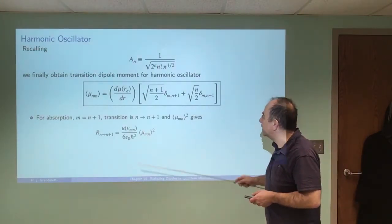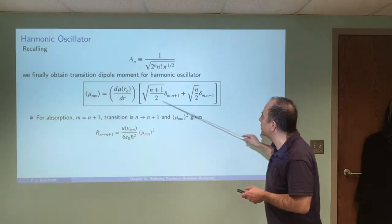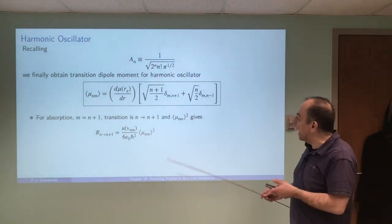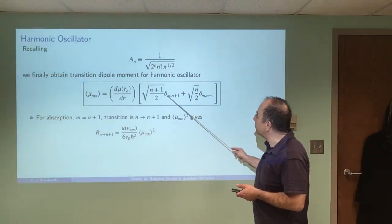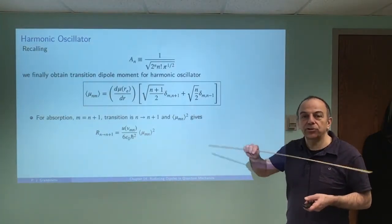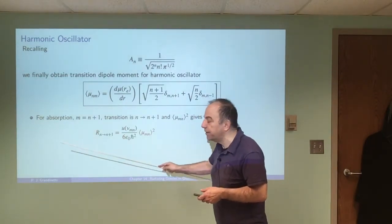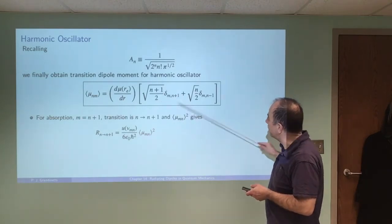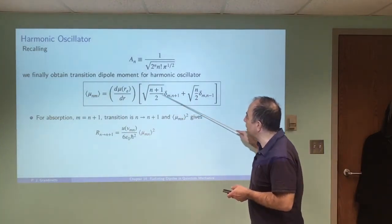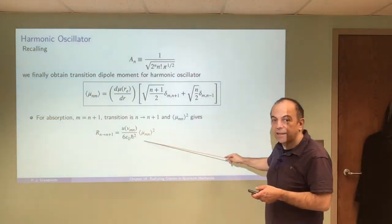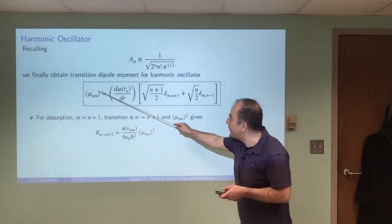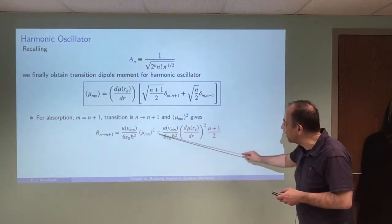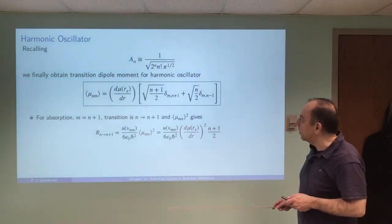That expression simplifies down and we've calculated the transition dipole moment for the harmonic oscillator. What we've learned is that transitions must involve states within plus or minus one of the state you're transitioning from. For absorption, where we're going up, the m state is n plus one, so that term is non-zero and gives us the transition dipole moment. Going back to our rate expression, we substitute in the squared transition dipole moment to get the transition rate for absorption.